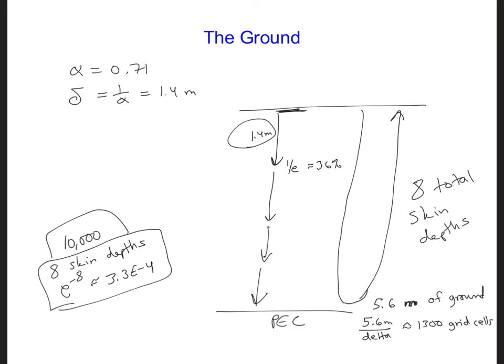Putting all this together, I calculate that the surface of the ground starts at about I equal 11,658 grid cells. So if the ground is 1,300 cells thick, this means we should set Imax would be 12,958.